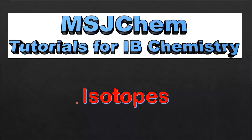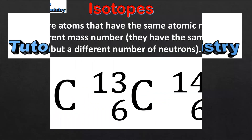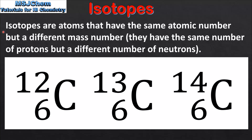This is MSJChem. In this video I'll be looking at isotopes. So let's start with a definition. Isotopes are atoms that have the same atomic number but a different mass number. In other words, they have the same number of protons but a different number of neutrons.